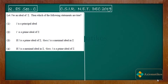Hello dear students, welcome to ExeoMatic course. This video is part of the solution series for CSIR NET December 2019, and we are doing Problem 85 of your paper. It's a problem from Part C and it is of abstract algebra. So let us have a look: let I be an ideal of Z, then which of the following statements are true?